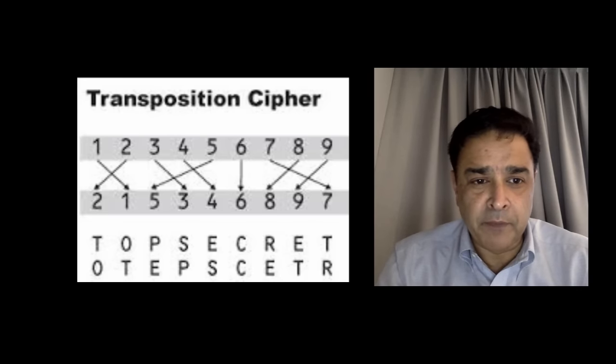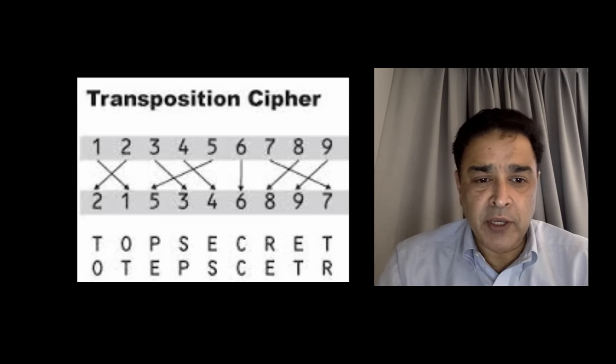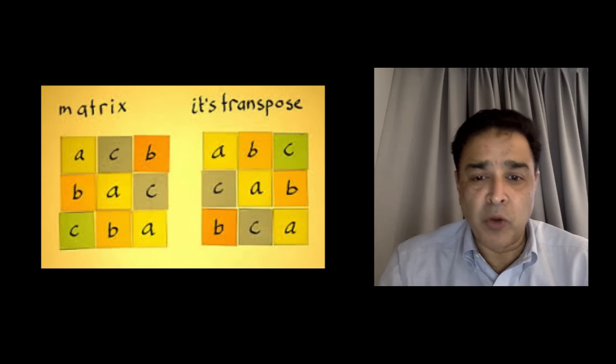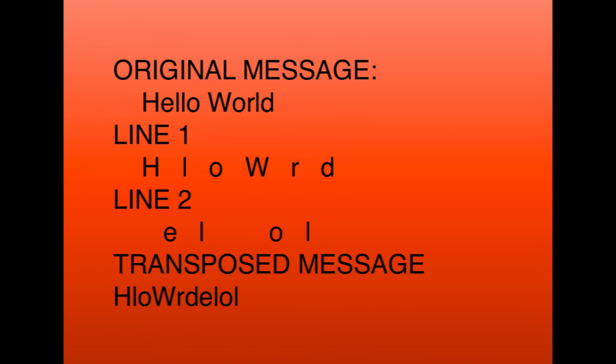There are some very interesting uses of transposition. One particular kind is commonly referred to as rail fence transposition. In this technique, a message is written on two or more lines, and each consecutive letter of the message is written to the next consecutive line. The text of the second and third lines are then appended to the first line to create the scrambled message. As you can see in this graphic, using the simple example 'hello world': line one of the transposition is H-L-O-W-R-D, and the letters E-L-O-L are written on the second line. So the transposed message becomes HLOWRDEL OL.